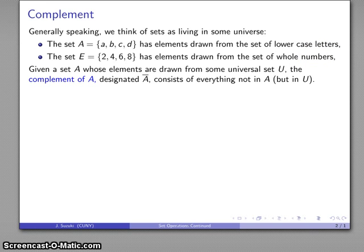Given a set A whose elements are drawn from some universal set - lowercase letters, whole numbers, real numbers, whatever - I can talk about the complement of A, which I'm going to designate by drawing a bar over the A. That complementary set is going to consist of everything that's not in A, but still in the universal set.